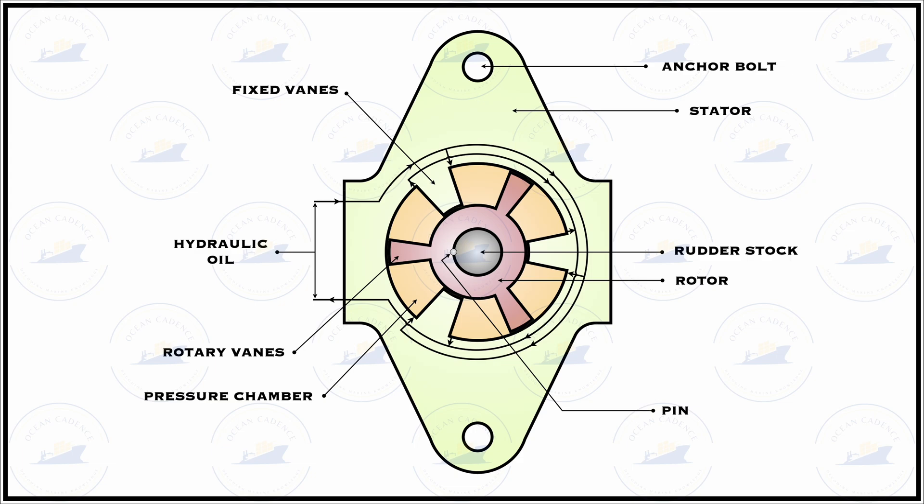Also, if it is a 2 fixed and 2 moving vane type system, the entire turnover ratio can be changed and can be as high as 130 degrees. But what we have in normal seagoing vessels is the 70-degree requirement as per the SOLAS regulations, and that is why the 35-degree hard to 35-degree hard design ratio is provided.